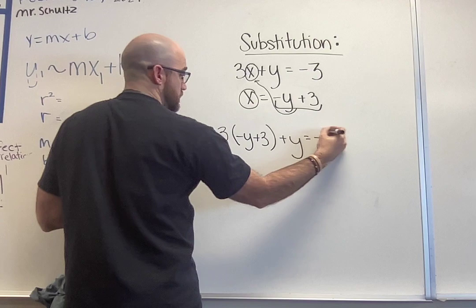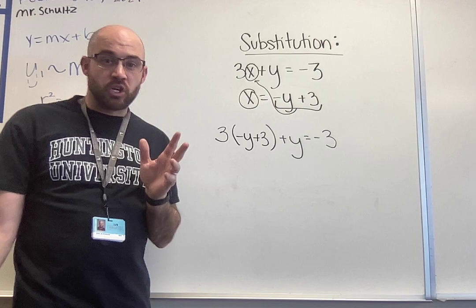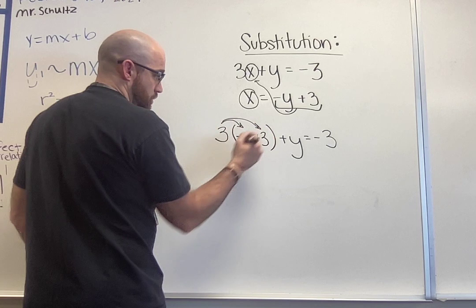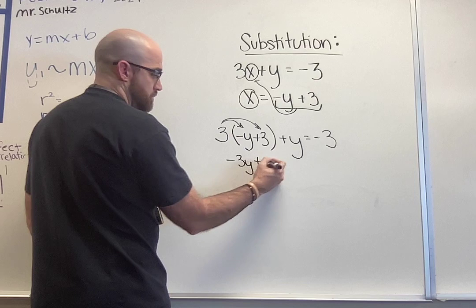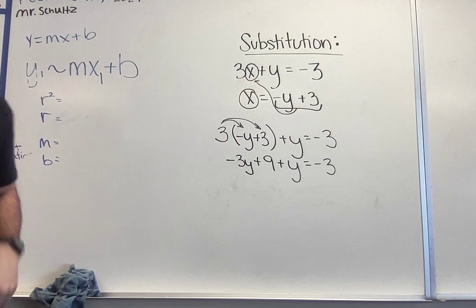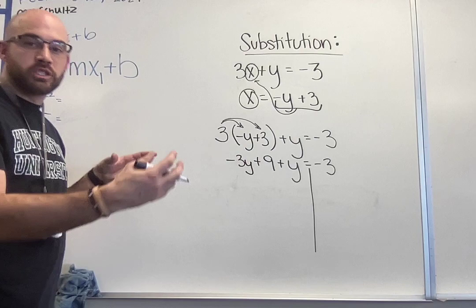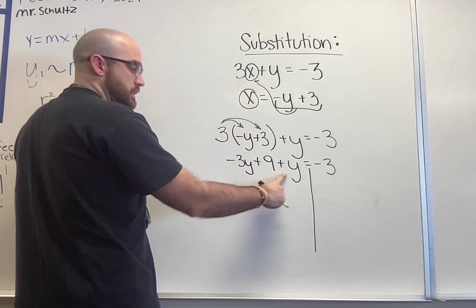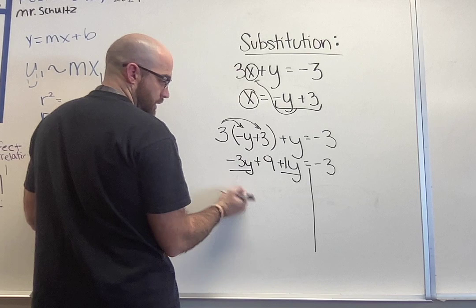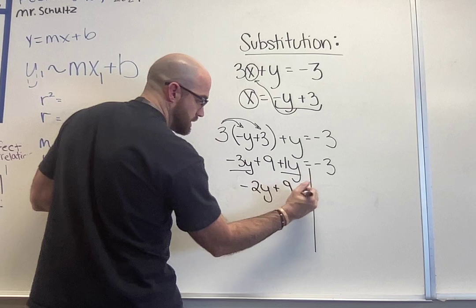Okay from here this is just our algebra solving skills. We're going to solve for our y so I'm going to distribute 3 times negative y, 3 times 3. So 3 times negative y gets me negative 3y. 3 times 3 gets me 9. This is a common spot where some students will make a mistake. Our equal sign is over here. Our variables are both on the left side so we would just combine our like terms here. I would just say negative 3y plus 1y.